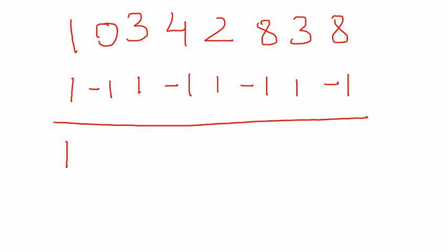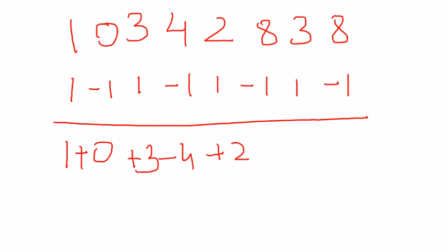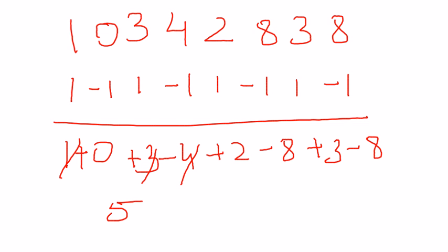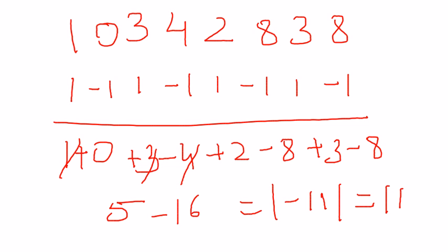Applying the pattern to each digit and summing the products: the remaining numbers give 2 plus 3 equals 5, minus 8 plus 8 equals 16, resulting in minus 11. Remember, we take the absolute value, so the result is 11, which is a multiple of 11. We therefore conclude that this number is perfectly divisible by 11.